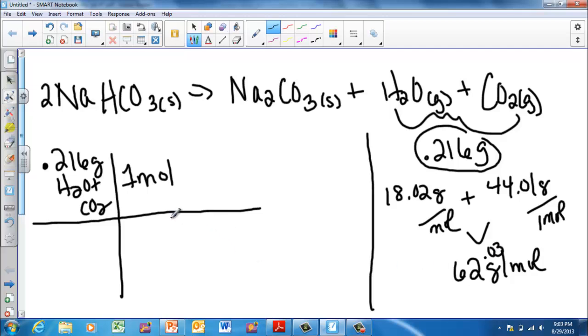Taking one mole of my super product, so to speak, dividing it by the molar mass, which is 62.03 grams. So I get 0.216 divided by 62.03. What I end up with here is a mole of one product.